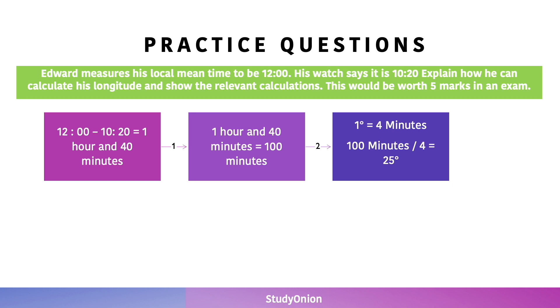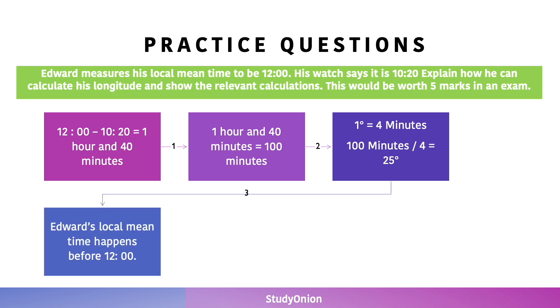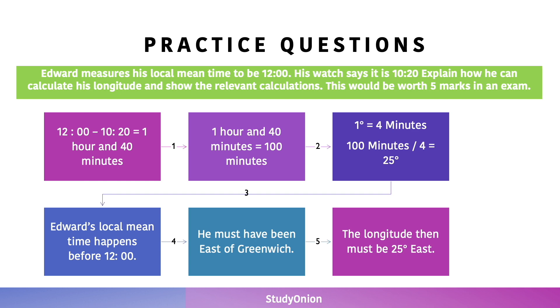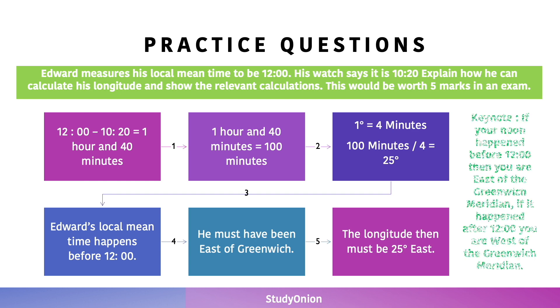The third step is to work out which direction. Edward's local mean time happens before 12:00, which means he must have been east of Greenwich. Which therefore means that the longitude must then be 25 degrees east.